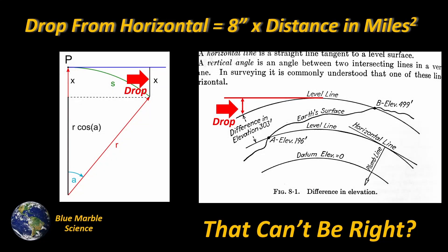Because the Earth is a really big ball with a radius of about 4,000 miles, that means the surface of the ball drops away from a horizontal line of sight at a rate of about 8 inches times the distance in miles squared.